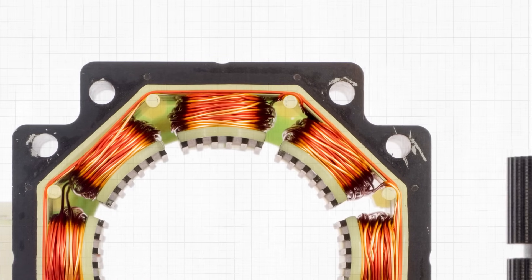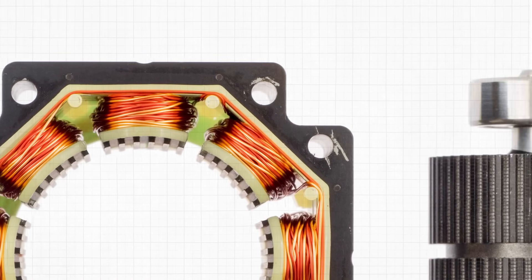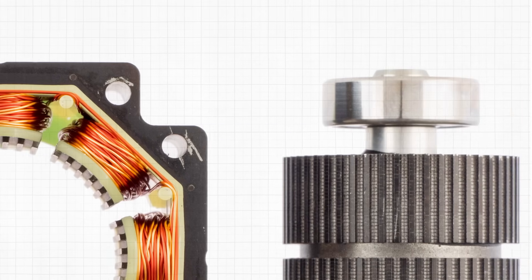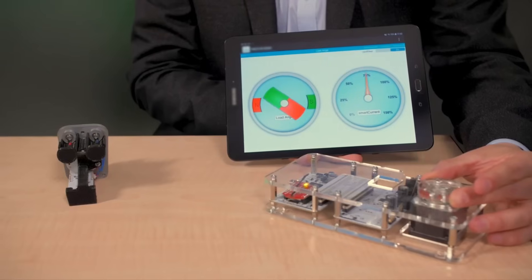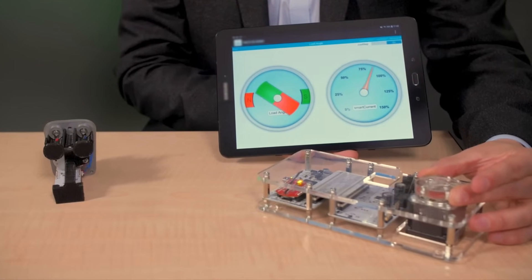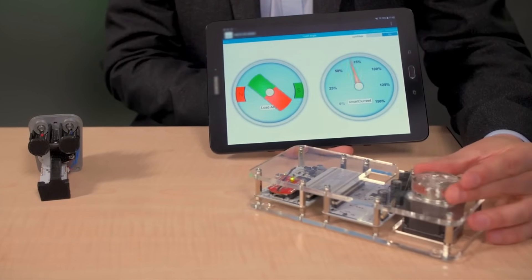Teeth on the rotor provide a path to help guide the magnetic flux to preferred locations in the air gap. This further increases the detent, holding, and dynamic torque characteristics of the motor when compared with the other two step motor types.